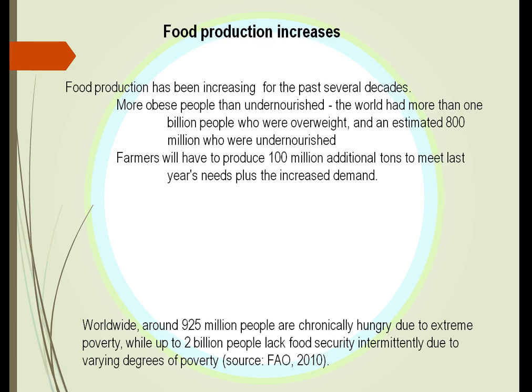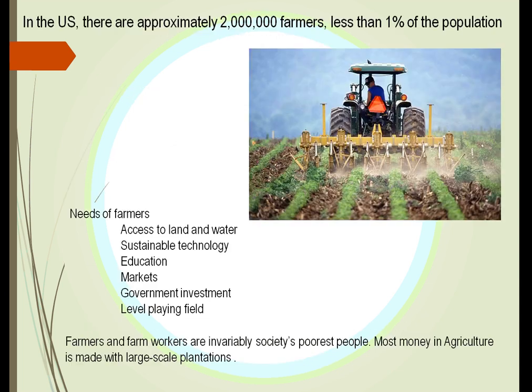We know that our food production has been increasing for the past several decades. Yet there are more obese people out there. The world has more than one billion people who are overweight, yet almost the same amount were undernourished. We have to produce more food every year to face our increased demand. Up to two billion people lack food security due to different levels of poverty. Again, we can do something about this.